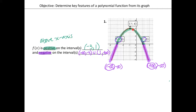So I go from negative 3 to positive 1. And then for the negative, we're going below the x-axis, and I had two portions below the x-axis. I went from negative infinity to negative 3, union 1 to positive infinity. And remember, you always have to go from left to right.